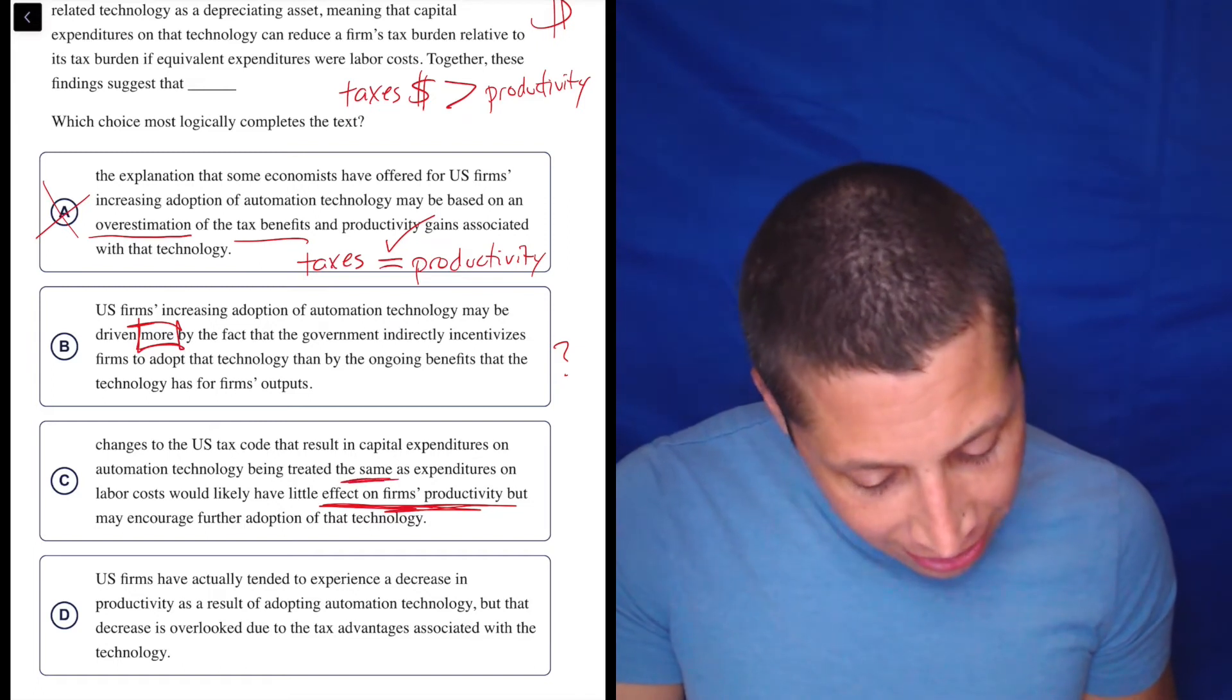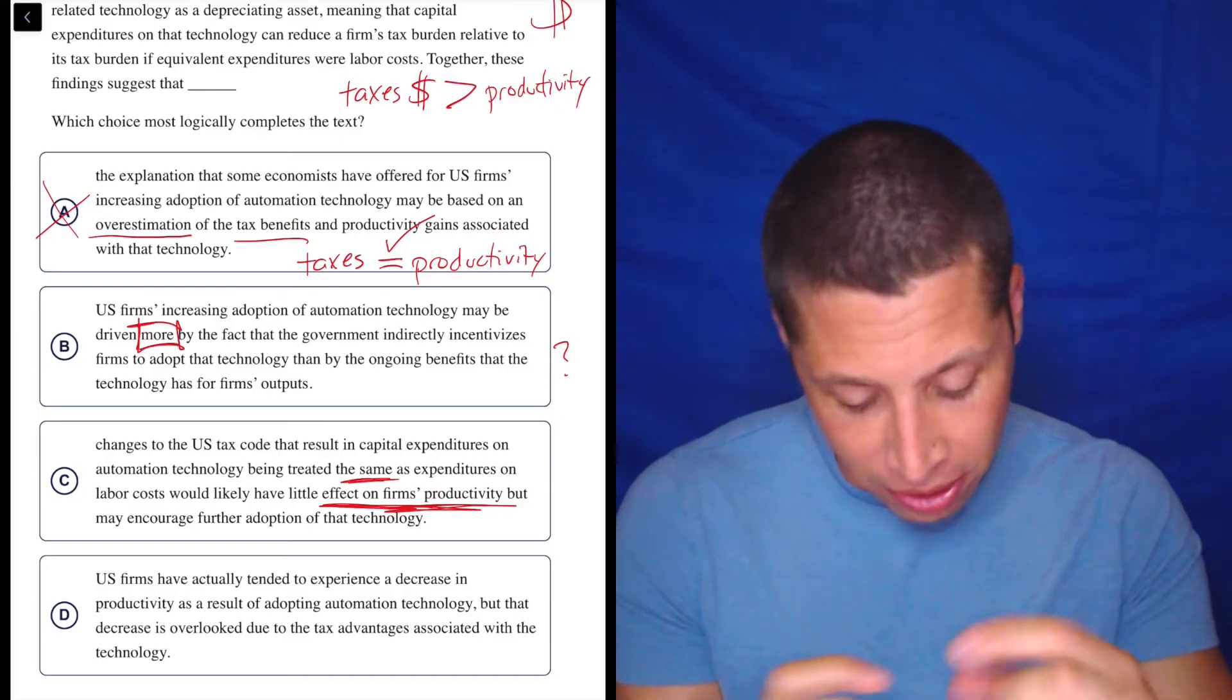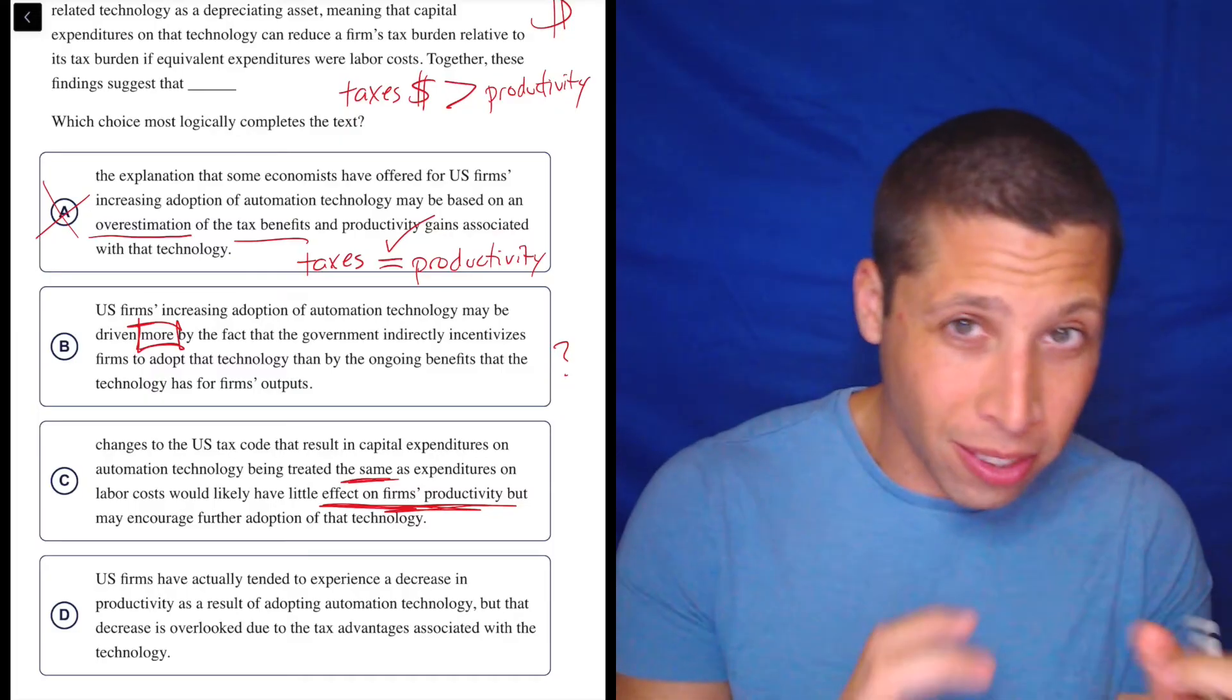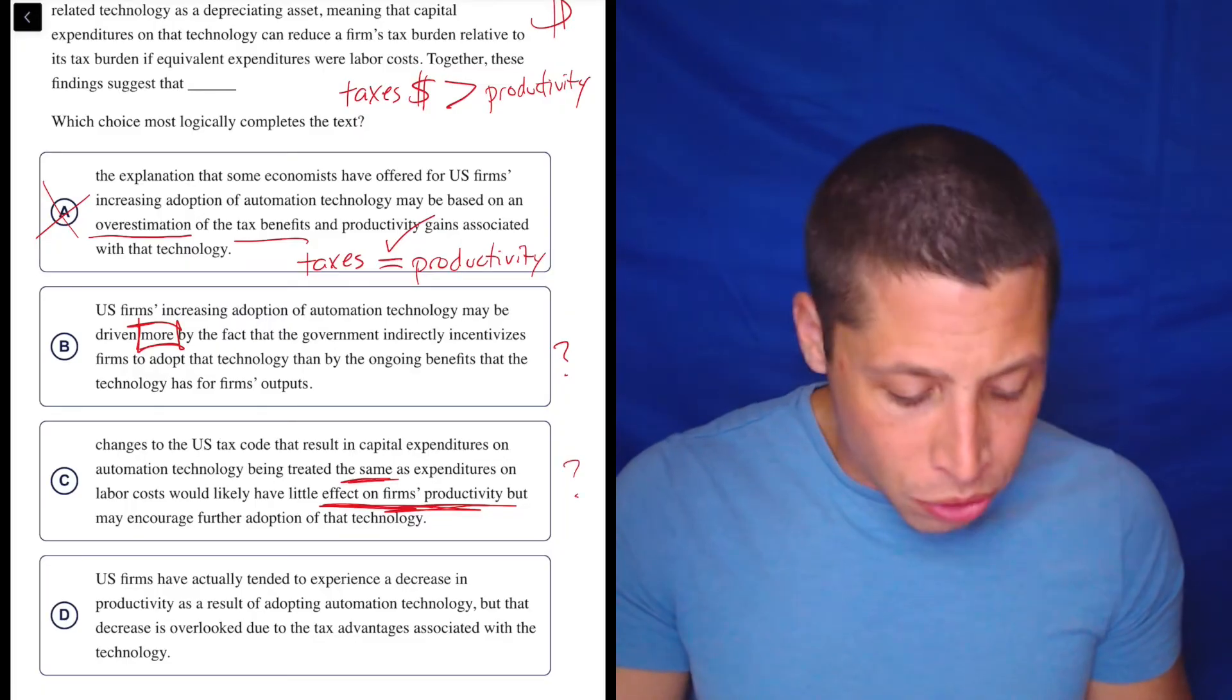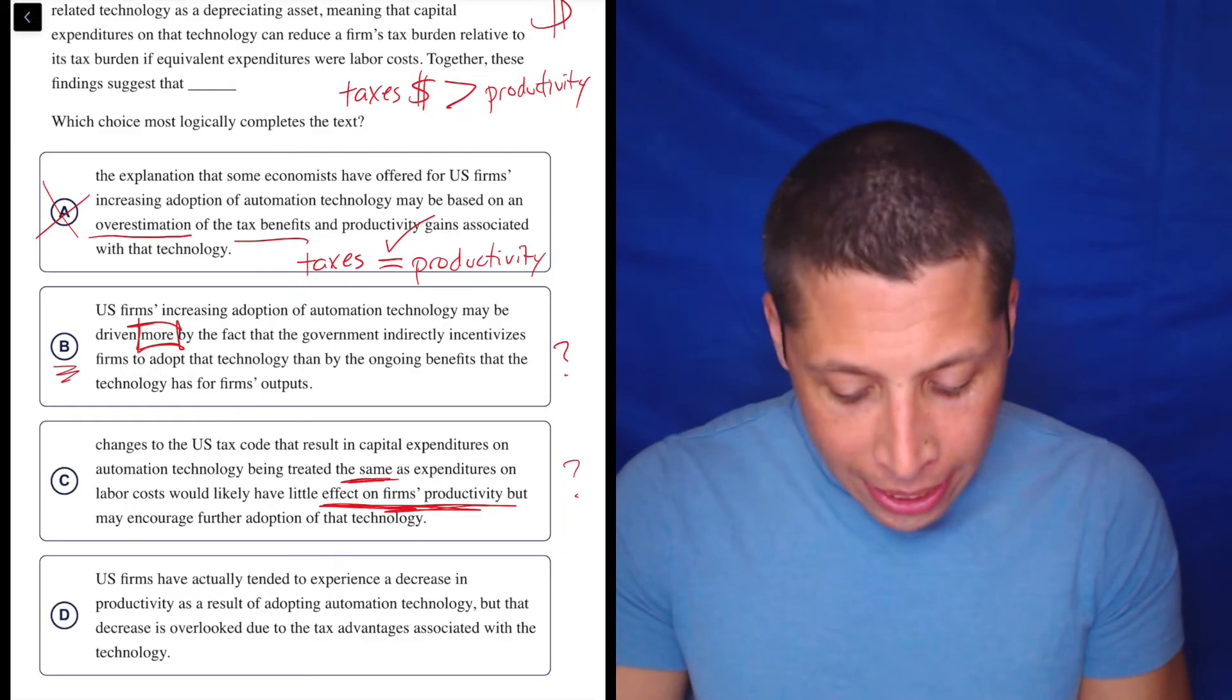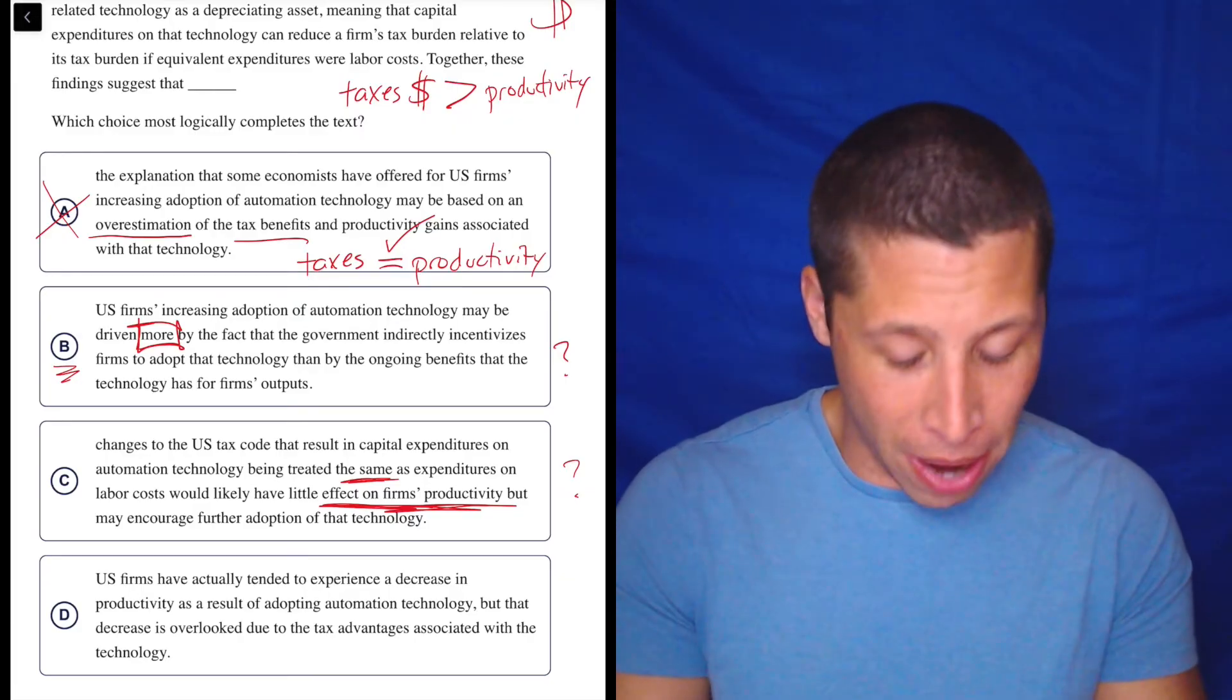We can look at it a little bit more deeply. Again, we got that the same, the same. They're kind of saying that maybe the capital, the taxes stuff is the same as the labor costs. I don't love that. So I may be confused here, but I kind of like B more still. It seems to be making a bit more of that comparison. Let's look at D.